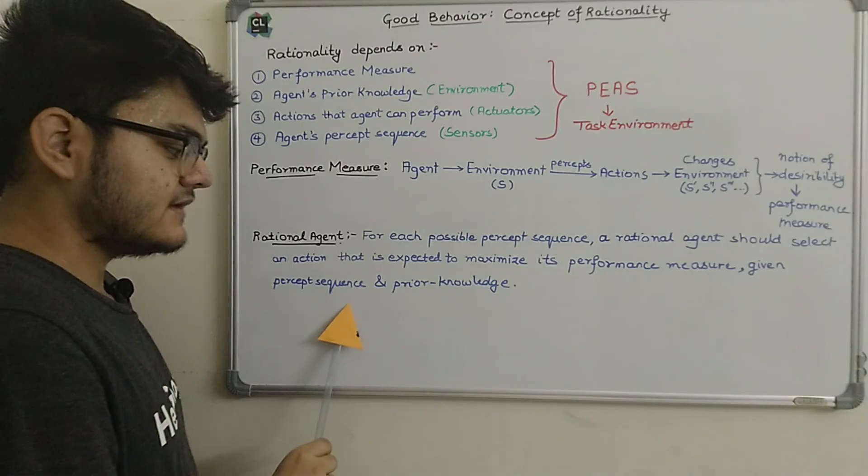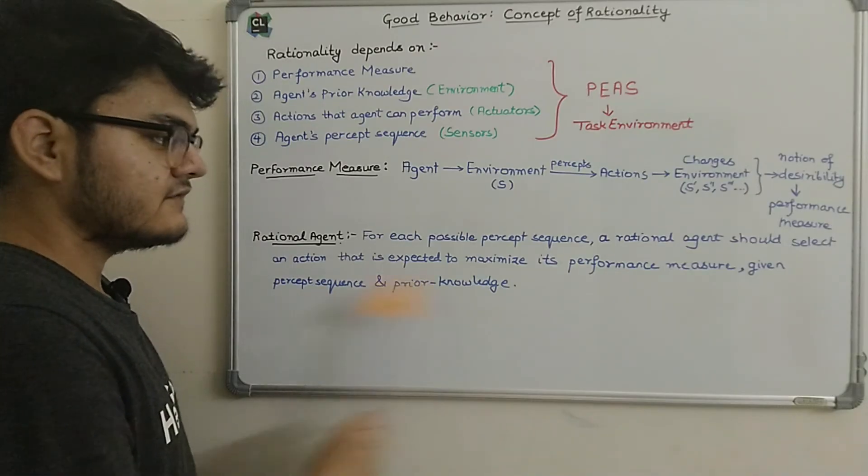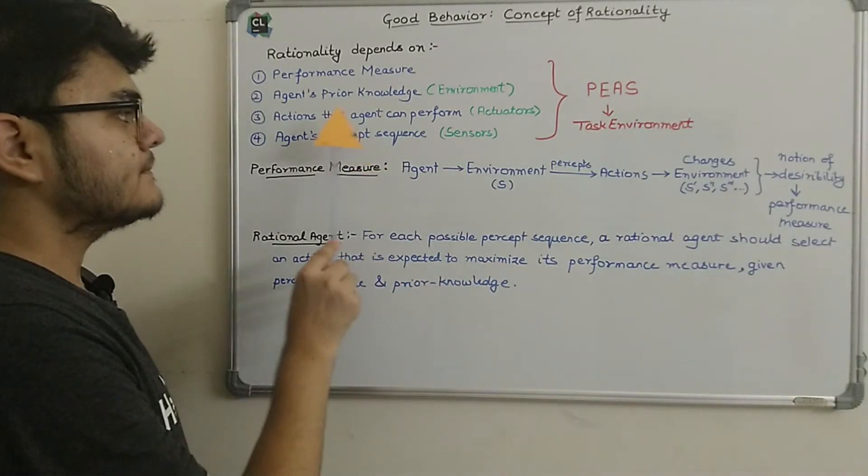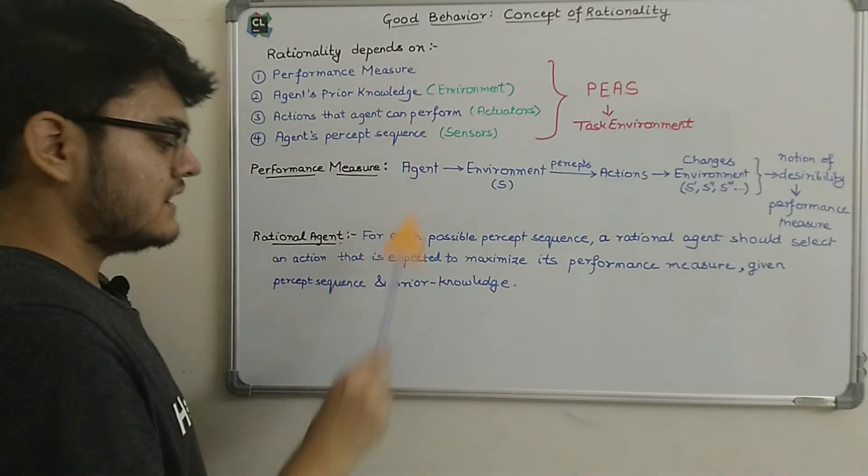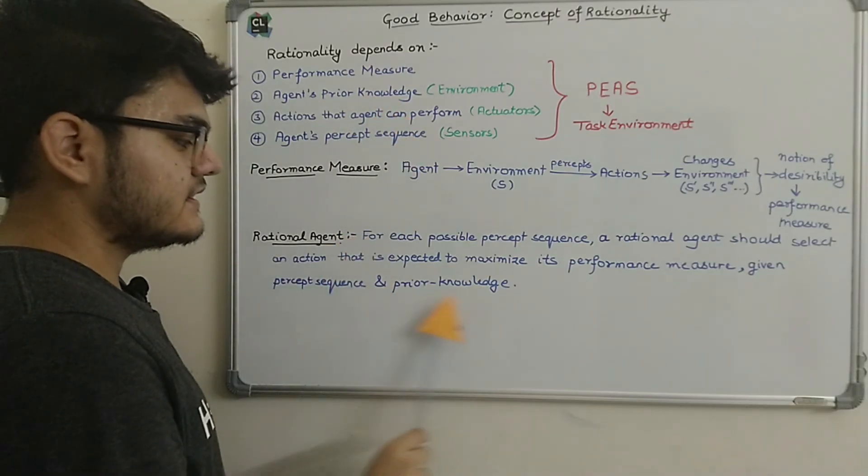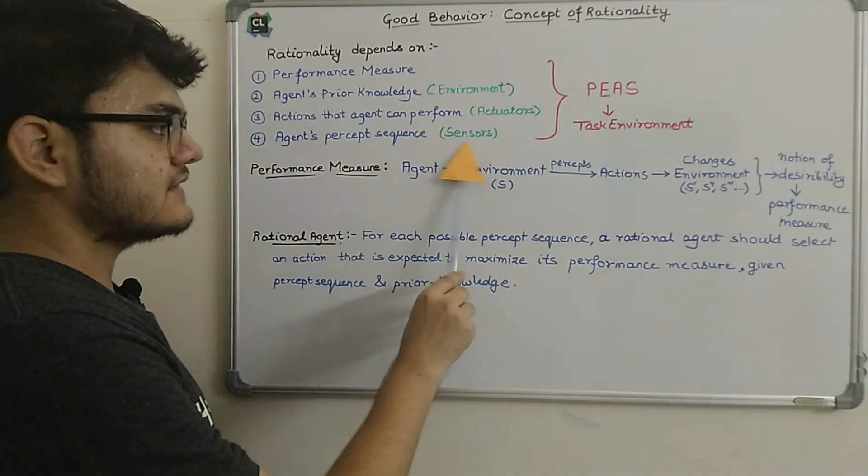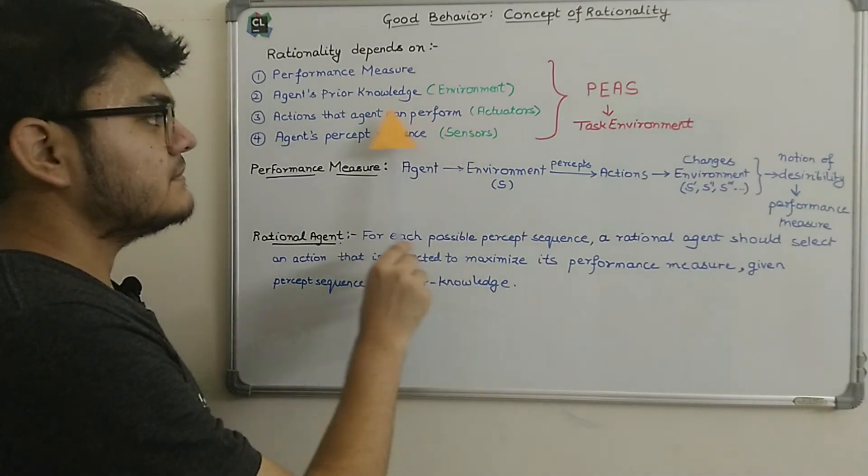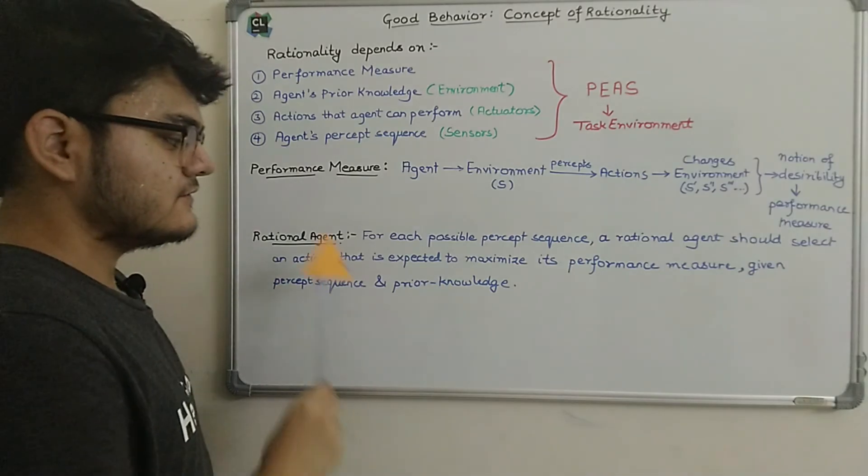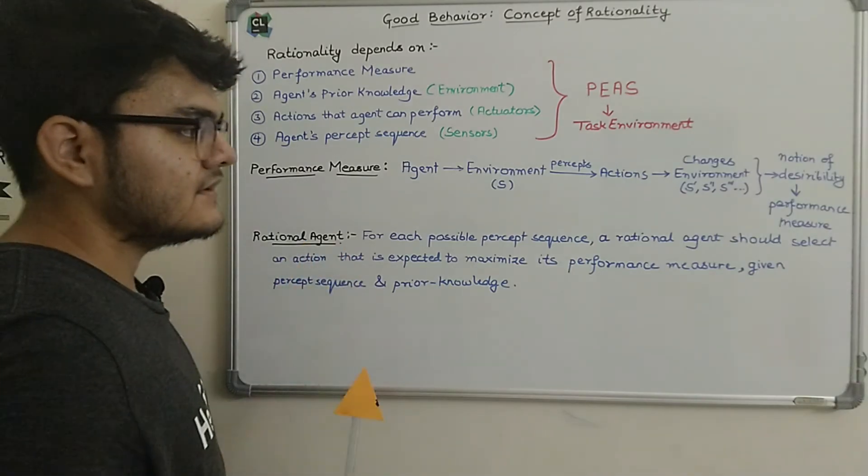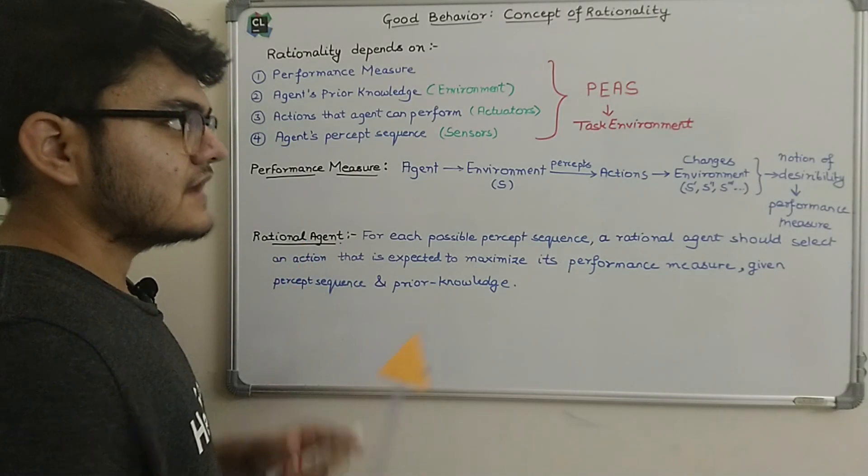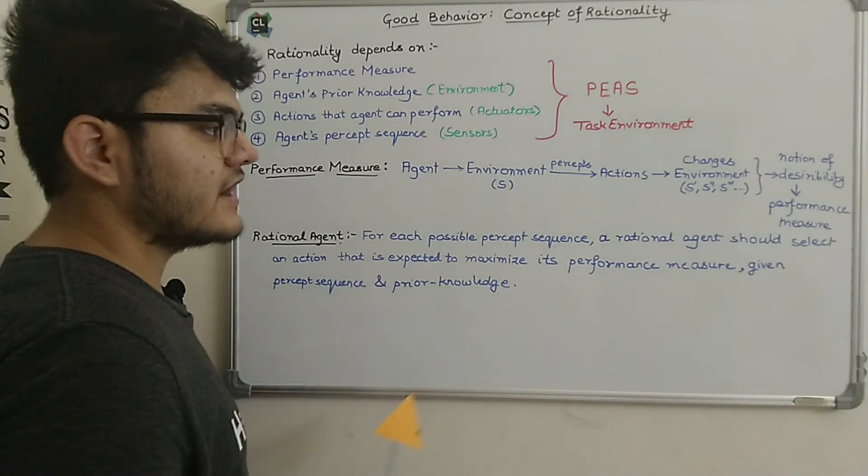Given percept sequence means the prior knowledge. And you can see I've written here prior knowledge. So basically percept sequence is the sensors and we have the prior knowledge. So then we can call it as a rational agent. So that's the whole concept of rationality.